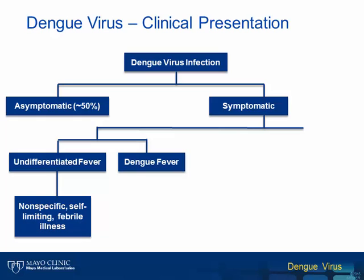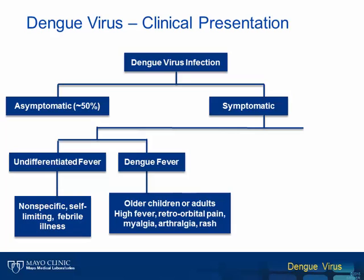The second manifestation of disease is dengue fever, which can be with or without hemorrhage. These patients are typically older children or adults and present with prolonged high fever and severe headache, retroorbital pain, and myalgia. While some mild epithelial hemorrhage may occur with dengue fever, these patients do not progress to significant plasma leakage, which is a hallmark of dengue hemorrhagic fever or dengue shock syndrome, which is the third potential clinical manifestation following infection with dengue virus.